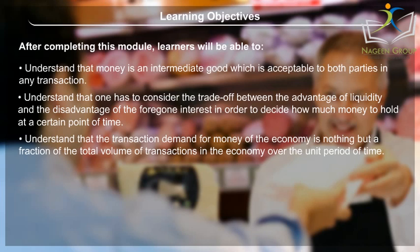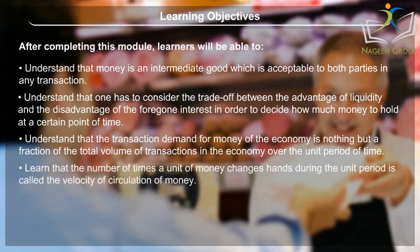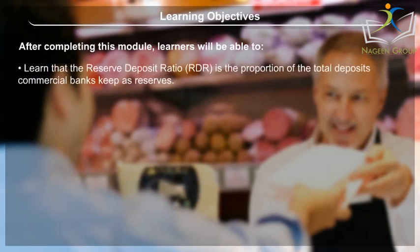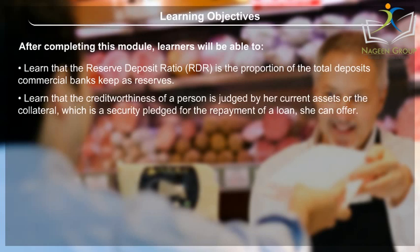Learn that the number of times a unit of money changes hands during the unit period is called the velocity of circulation of money. Understand why the interest rate is usually thought of as an opportunity cost or the value of holding money balance. Learn that the reserve deposit ratio or RDR is the proportion of all the total deposits commercial banks keep as reserves. Learn that the creditworthiness of a person is judged by her current assets or the collateral, which is a security pledged for the repayment of a loan she can offer.